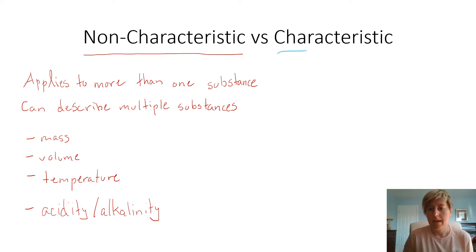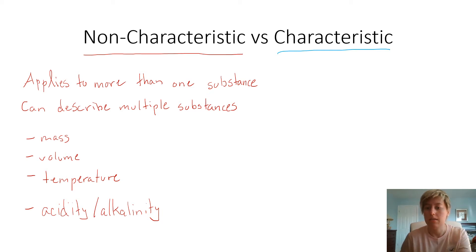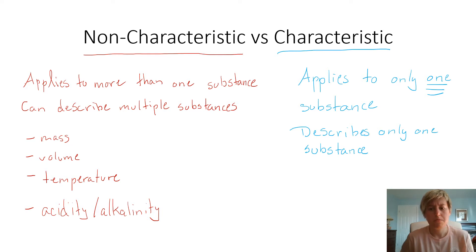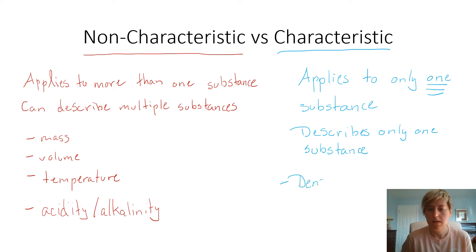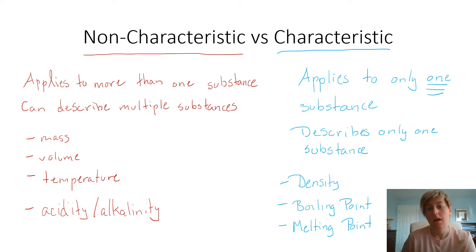A characteristic property, on the other hand, can only apply to one specific substance — it is a property that that substance alone has. There are far fewer characteristic properties than non-characteristic ones, for the obvious reason that each only describes one particular substance. The key characteristic properties we're going to talk about are density, boiling point, and melting point. We're going to start with our non-characteristic properties first.